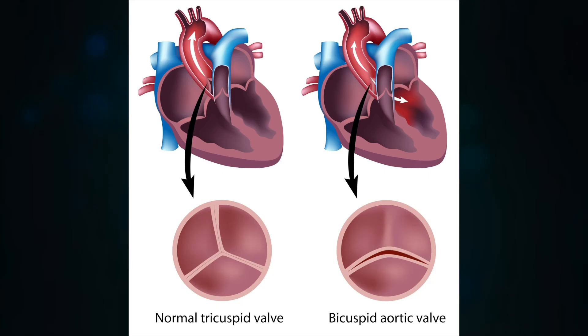What causes the aortic valve to stenose or to narrow? Most commonly it's a condition of advancing age. As we get older, a process known as calcification develops and can affect the valve, making it narrower and leading to symptoms. There are other causes, including a congenital condition called bicuspid aortic stenosis, where the aortic valve has only two leaflets instead of the typical three — a condition you are born with that can lead to aortic stenosis.